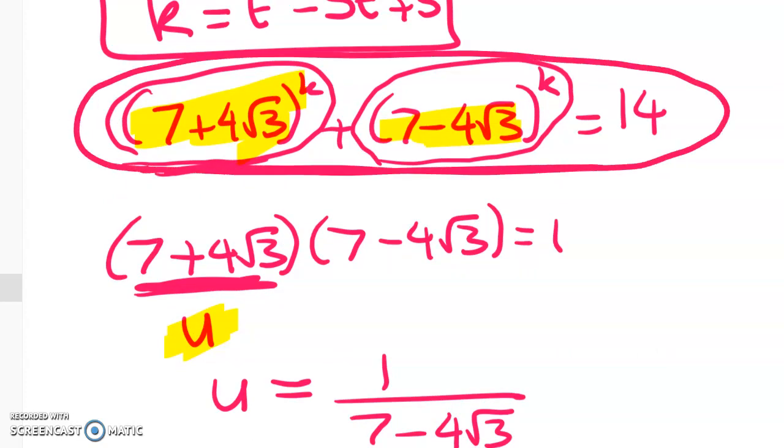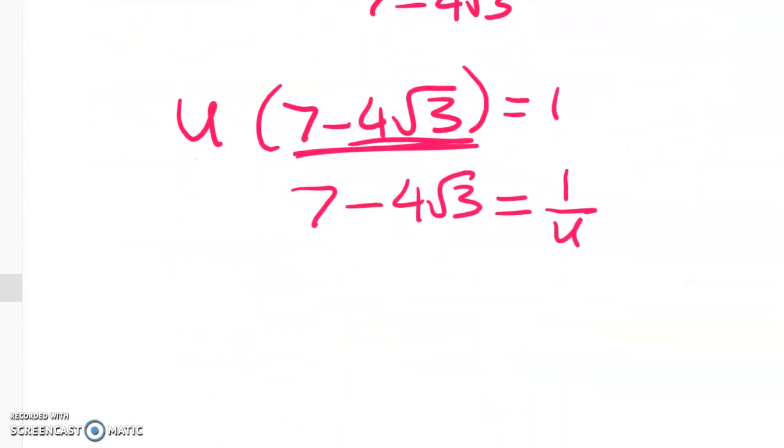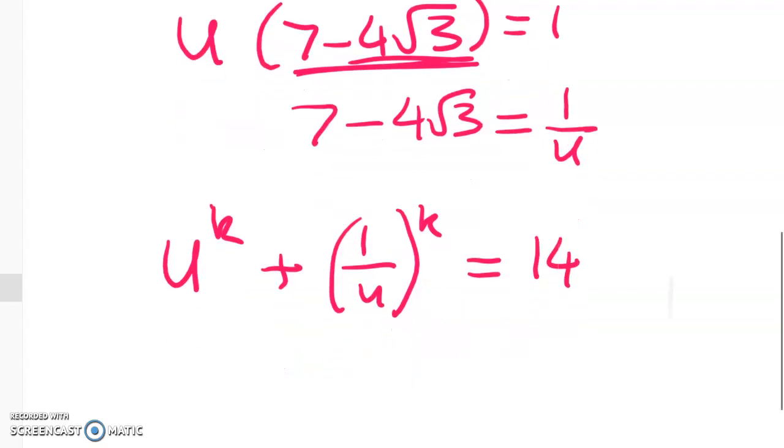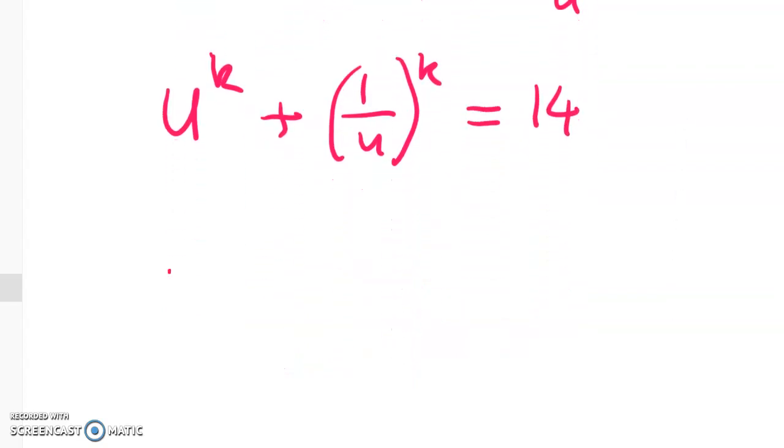I think this might be my messiest scholarship calculus video this year. So we have u to the power of k plus 1 over u to the power of k is equal to 14. Now some of you are going to stop watching now and go and finish this question off and that is just great if that's what you do. Just make sure that you end up getting four solutions and if you don't you'd better come back and keep watching. So we've got u to the power of k plus u to the power of negative k is 14.